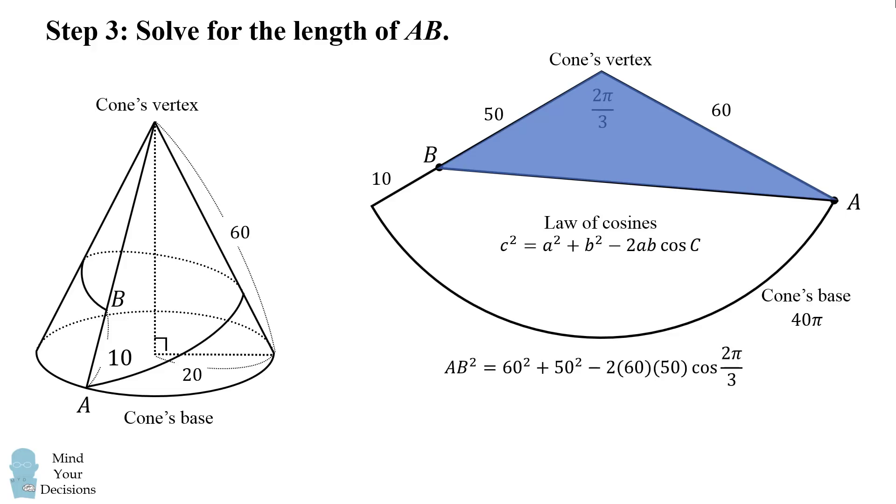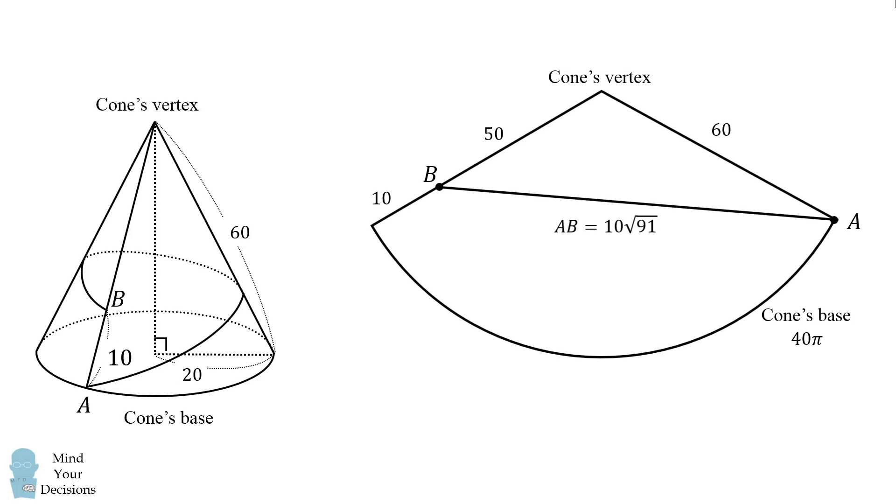So here we have the length of AB squared is equal to 60² plus 50² minus 2 times 60 times 50 times the cosine of the central angle 2π over 3. We can simplify this to get AB² is equal to 9100, which means AB is equal to 10 times the square root of 91.